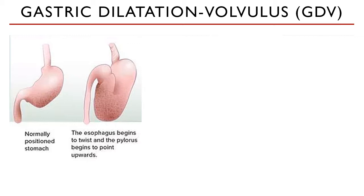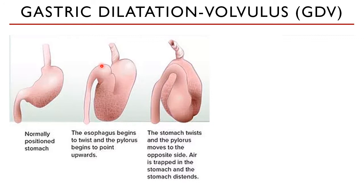At some point, this distended stomach will start to twist along its longitudinal axis. The twisting is what we call the volvulus. It will then bring the pylorus upwards and cause it to shift to the right of the midline. Gas distention or the accumulation of gas within the stomach can happen before or after the twisting. Once the twisting is greater than 180 degrees, the esophagus will twist and close off. At this point, the animal will not be able to relieve the distention through belching or vomiting. The shift in anatomical orientation of the stomach will also cause the pylorus to not let anything flow into the duodenum, so that outflow is also cut off.